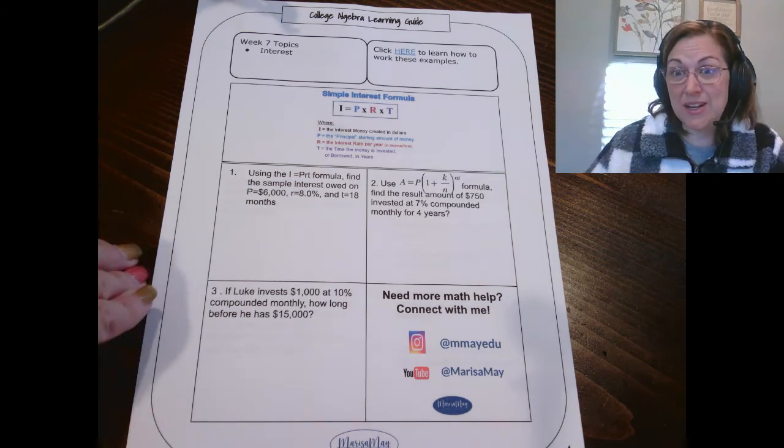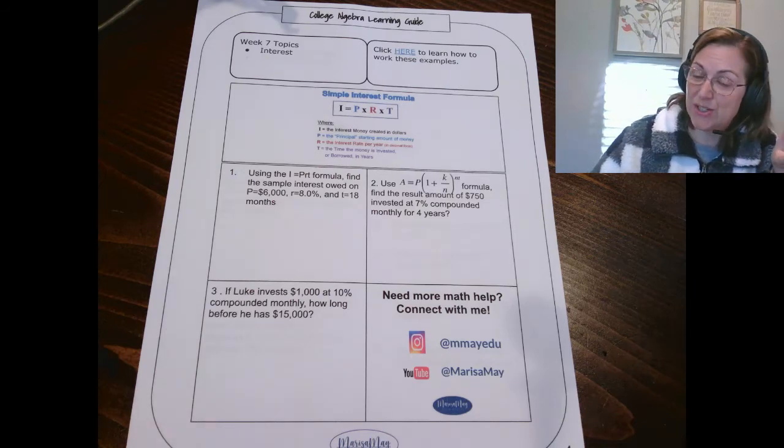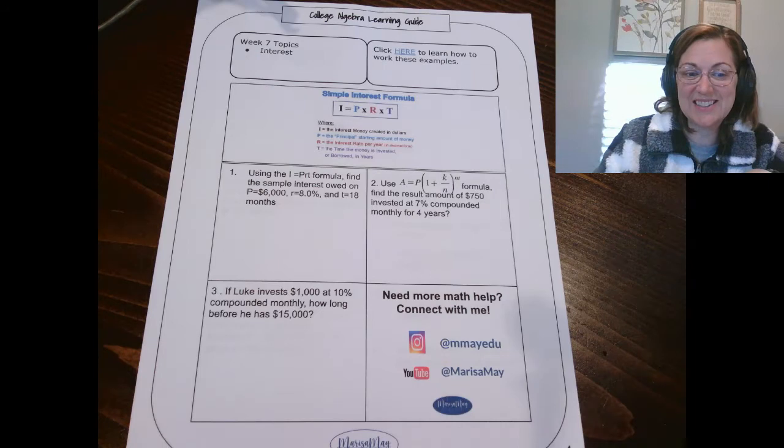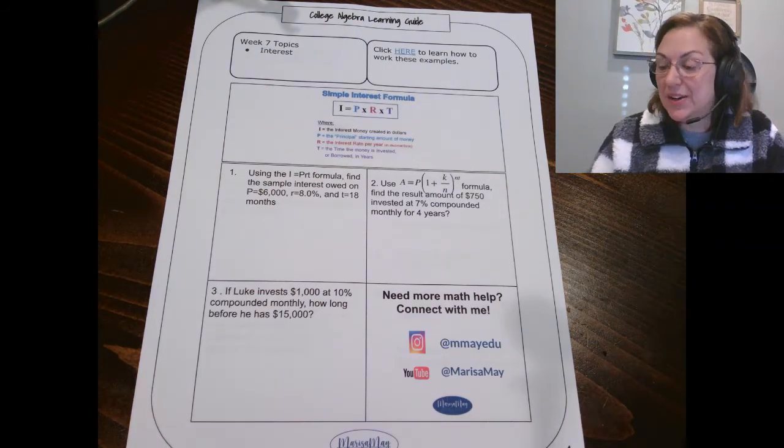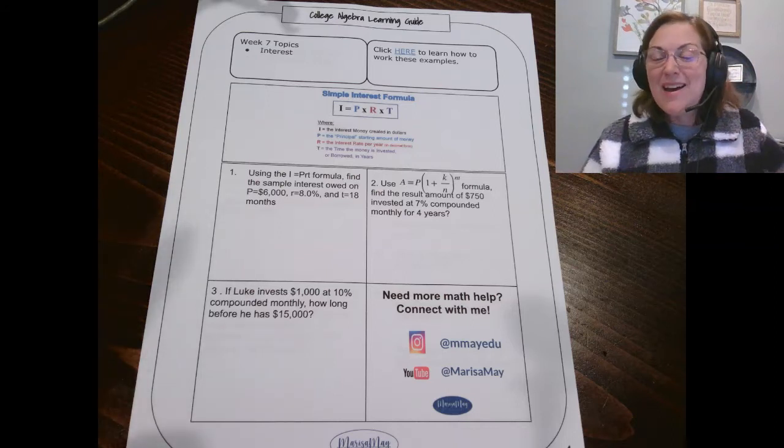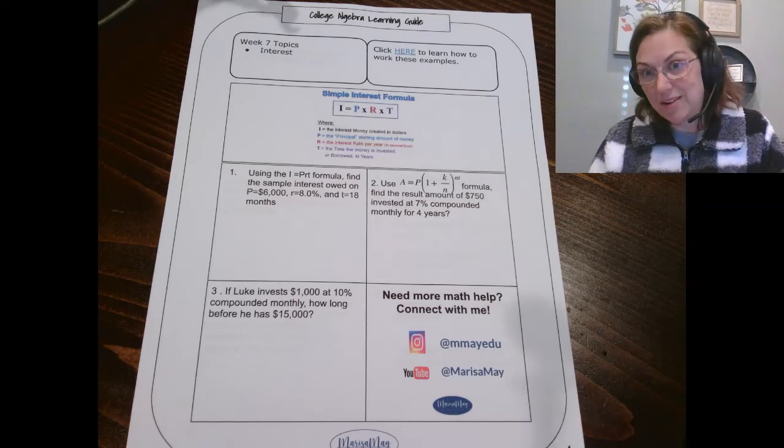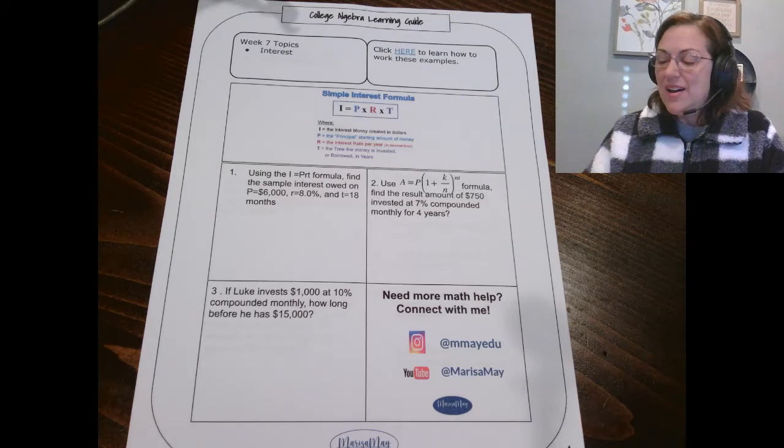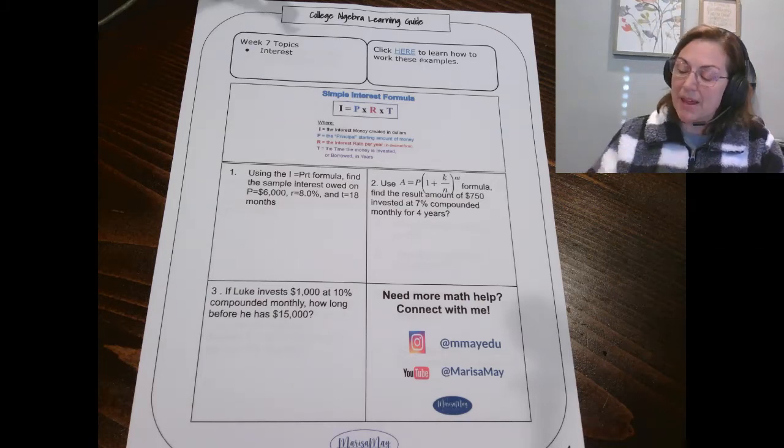Today this video is going to focus on interest and we're going to look at simple interest and then we're going to turn our attention to compound interest. I will be using the Desmos graphing calculator as the calculator today only because it's free and available to everyone. I will link it below in the description. However, if you're using the 83 or 84 or some other calculator that's totally fine. I just present one that's available to everyone. So let's jump in.